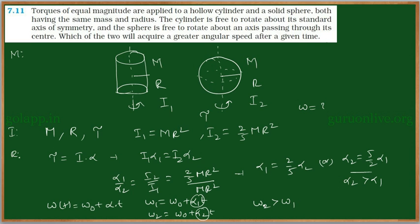So, by giving equal amount of torque to these two bodies, we will have greater angular speed for the sphere than angular speed of cylinder.